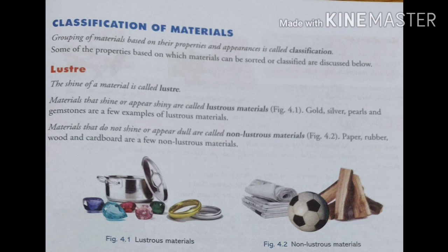Materials that do not shine or appear dull are called non-lustrous materials. They don't shine — they are dull. For example, paper, rubber, wood, and cardboard are all non-lustrous materials.